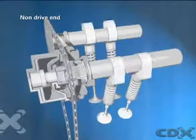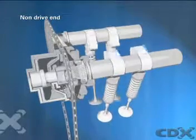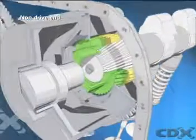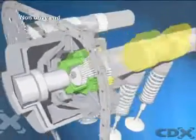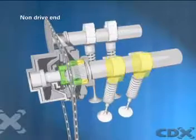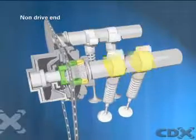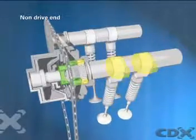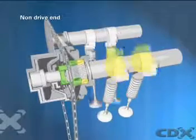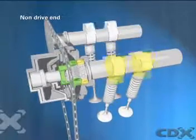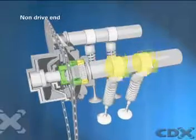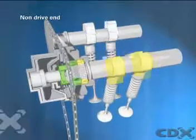Cam phasing VVT varies valve timing by shifting the phase angle of the camshaft. At high engine speeds, the inlet camshaft phasing can be rotated in advance to enable earlier intake, increasing the amount of valve overlap. This is controlled by the engine management system and actuated by hydraulic valve gears.